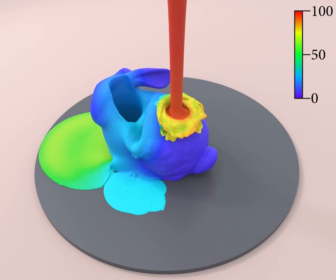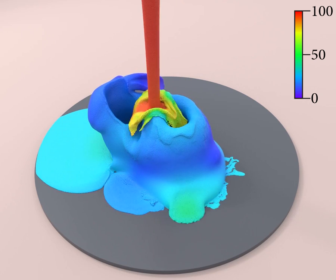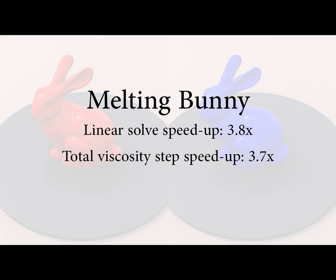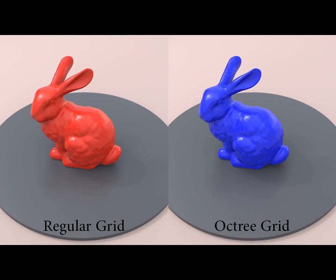Here we use a pseudocolor map to visualize the liquid temperature. Our results compare well to the regular grid with a speedup of 3.7x.